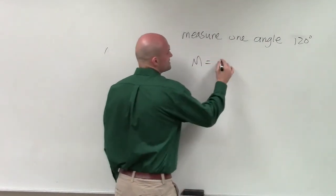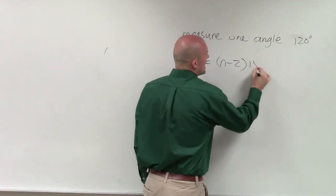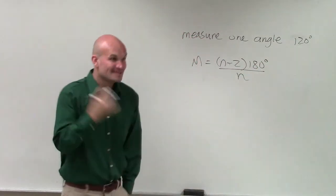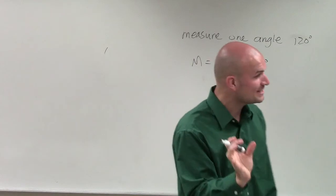The measure of one angle, Zach, we said was (n-2)×180 divided by n. That's the measure of one angle of a regular polygon.